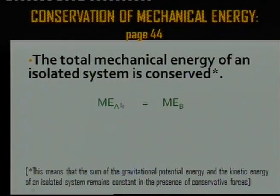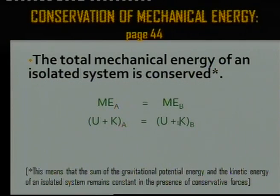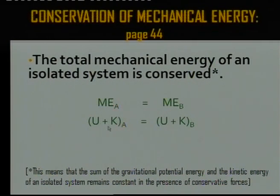Another way of writing it: mechanical energy at A must equal mechanical energy at B — the total mechanical energy is conserved, meaning it must be the same. Mechanical energy consists of two types: gravitational potential energy plus kinetic energy. So at point A, gravitational potential energy plus kinetic energy must equal at point B, gravitational potential energy plus kinetic energy. Follow whatever labels the question uses — top, bottom, or other points.